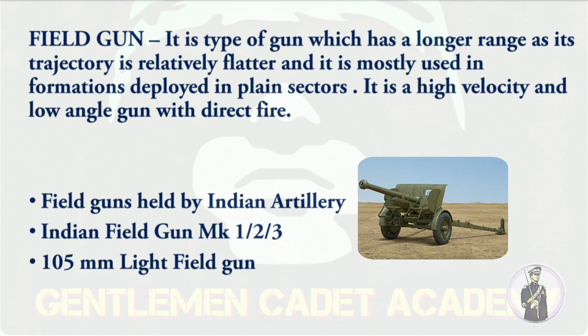The field guns are totally opposite to howitzer guns. While howitzers have a high trajectory, field guns have a flat trajectory. Field guns are used whenever enemies are engaged at a longer distance. They played a major role in the 1965 and 1971 wars. Field guns are also used to suppress sound from moving elements like tanks and mechanized infantry when they are moving towards the international boundary.